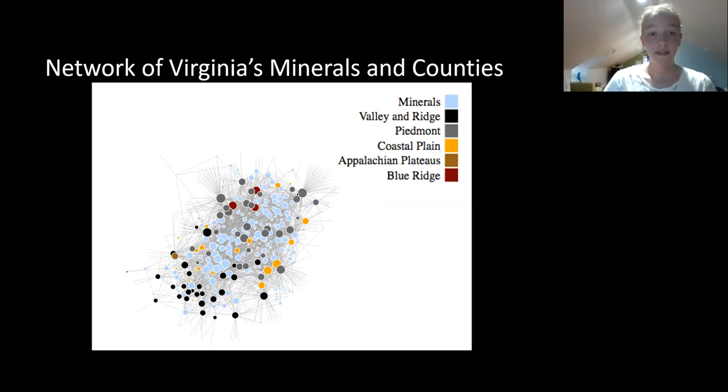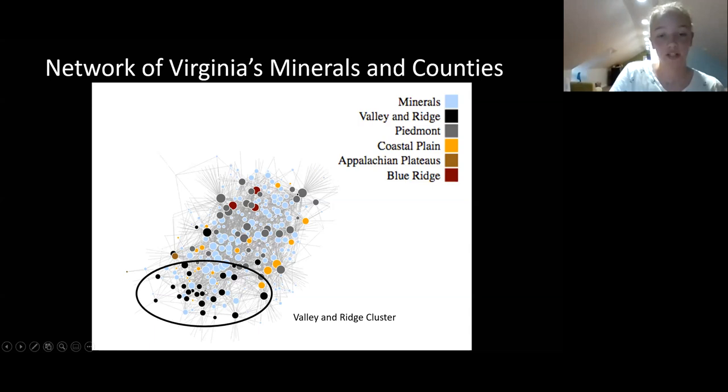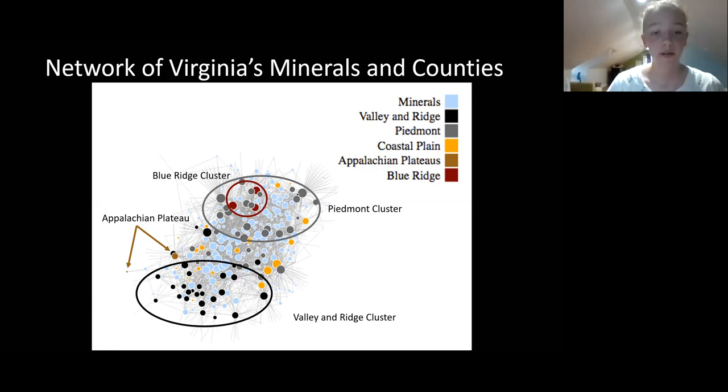This is a network of Virginia's minerals and counties. I've colored the mineral nodes light blue, so all of the light blue nodes on here are the minerals. I colored the counties based off of geomorphic provinces. This is the Appalachian Plateau counties. There are only three of them. The valley and ridge are all here. And then the blue ridge, Piedmont is the largest, and then the coastal plain on the east. A main cluster on this network is of the valley and ridge counties here. They were pulled together because that shows that they have a lot of minerals in common, mineral species in common. So that's why the network pulled them together. Same with the blue ridge counties. They were pulled together. The Piedmont. The two Appalachian Plateau counties are over here. And then the coastal plain counties are pretty widely distributed throughout the network with a slight trend here. It makes sense that they're all kind of clustered with their own counties since that's how they are on the map.